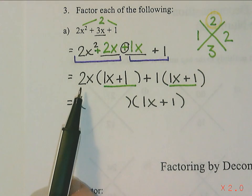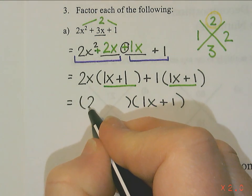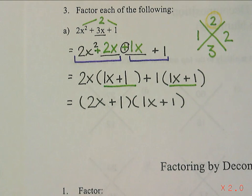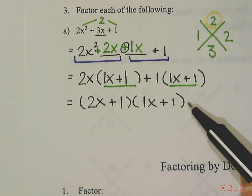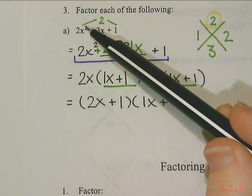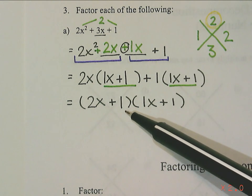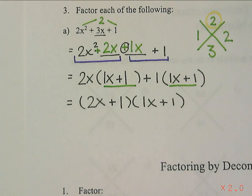What goes in that first bracket? Well, the parts that we're multiplying by. So I have 2x and +1. So the multiplication question that gave me an answer of 2x² + 3x + 1 was (2x + 1) times (1x + 2).